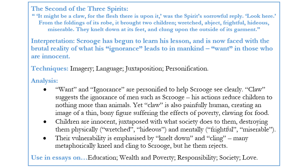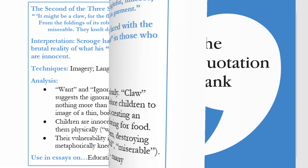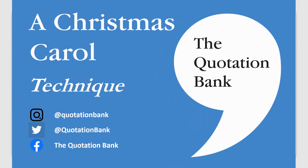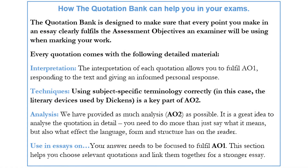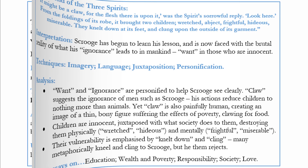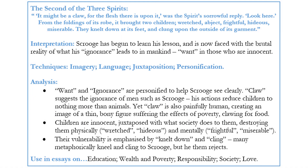But now we want to delve into some detailed analysis of how Dickens conveys this idea to the reader, and we're going to start by identifying some literary techniques. Using subject-specific terminology correctly — in this case the literary devices used by Dickens — is a key part of assessment objective 2. In this quotation, Dickens uses a variety of specific language choices, as well as juxtaposition, imagery, and personification.